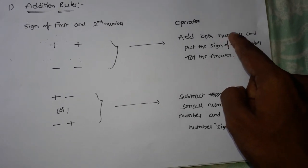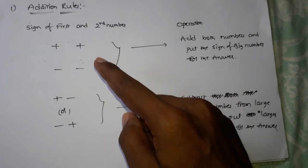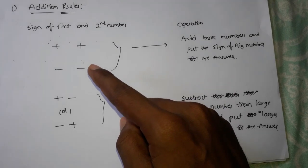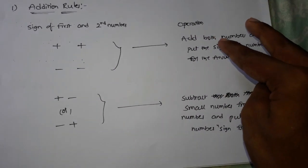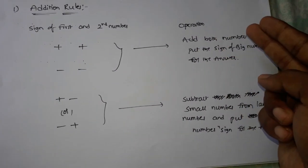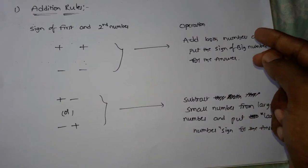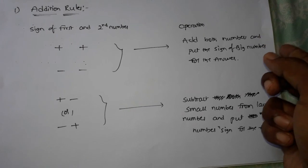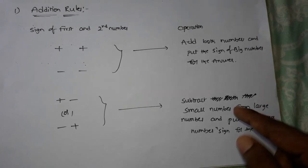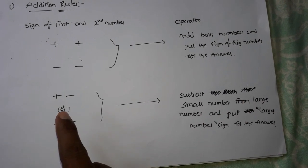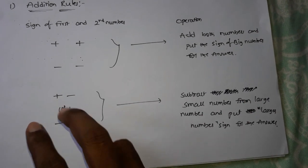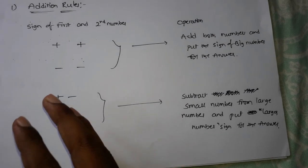First rule: when two numbers have the same sign, add the two numbers and the sign of the big number will be the answer. Second rule: when the symbols of two numbers are different — subtract the small number from the big number and the sign of the big number gives the result.